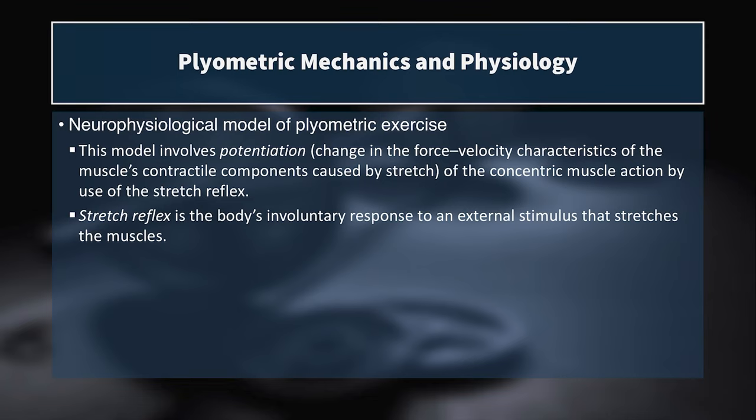We can also explain plyometrics using the neurophysiological model, which involves what's called potentiation — a change in the force-velocity characteristics of the muscle's contractile components caused by stretch. This model involves potentiation of the concentric muscle action by use of the stretch reflex, or myotatic reflex. Potentiation means a priming action changes or enhances a muscle's force-velocity characteristics in a subsequent action. For example, you can potentiate a vertical jump by first doing a heavy back squat for a double, accessing those high-threshold motor units so they're easier to activate in a subsequent max-effort vertical jump.